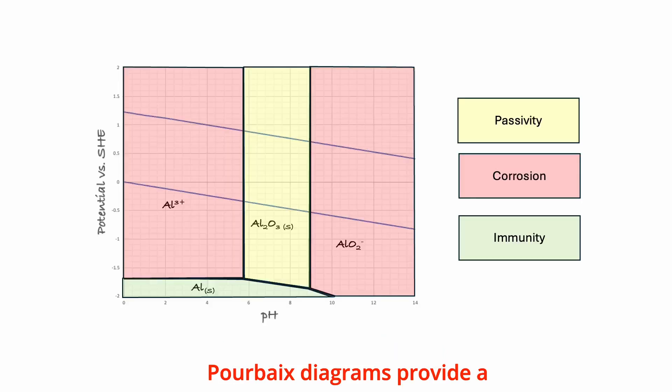Pourbaix diagrams provide a graphical representation on a potential versus pH plane of phases or species that are thermodynamically stable in an aqueous environment. These diagrams are very useful in the study of corrosion.